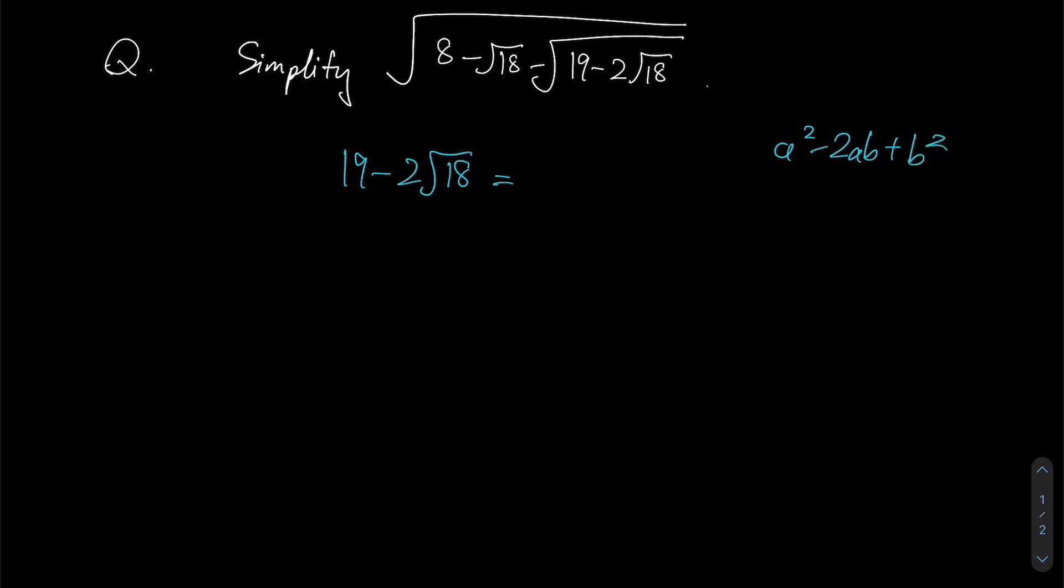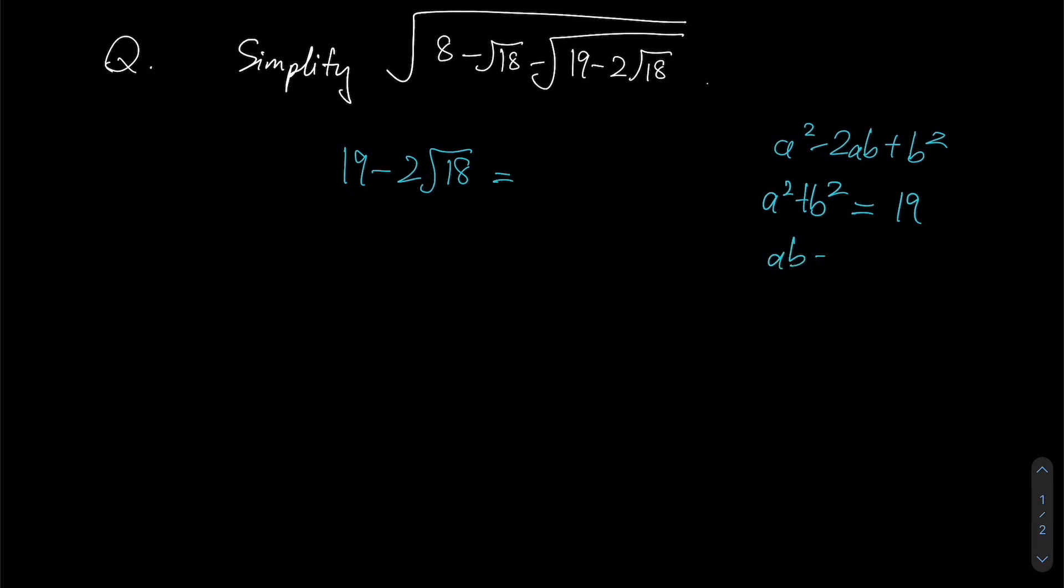So you should be able to see that by comparing your terms, a squared plus b squared is probably going to be 19, and negative 2ab is going to be negative 2 root 18. So let's keep that in mind: a squared plus b squared is 19, and therefore ab would be equal to root 18.